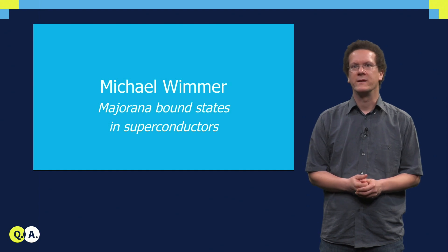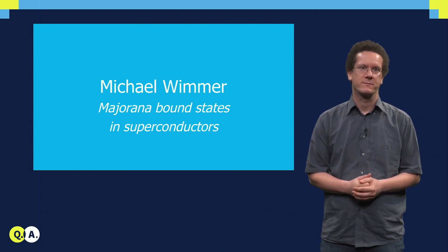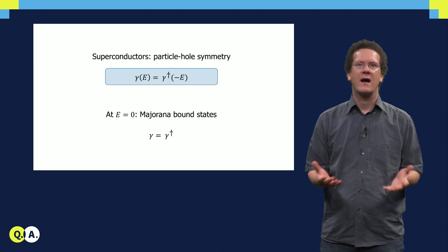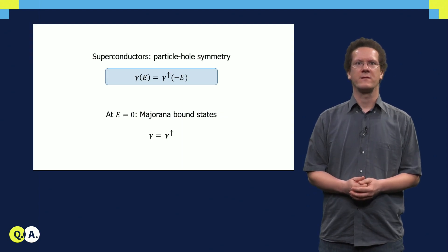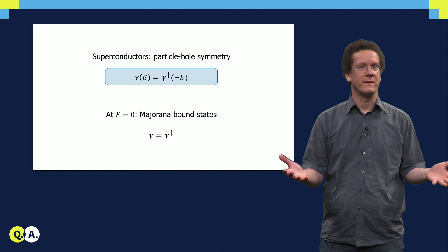Let us now look a little bit more in detail how we can find Majorana bound states in superconductors. I showed you in the last video that Majorana bound states can appear quite naturally there.